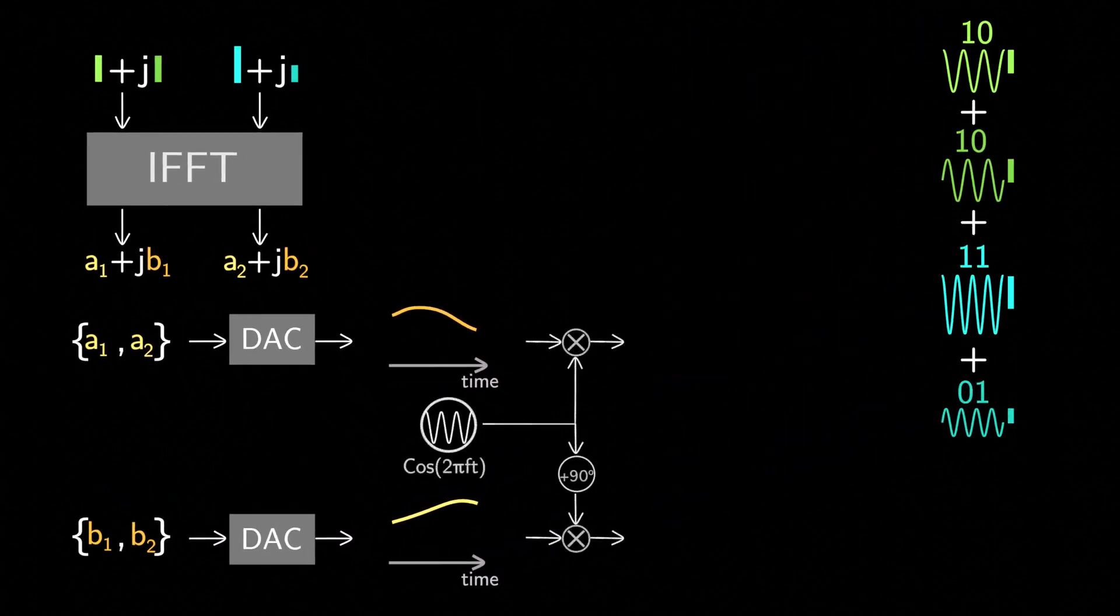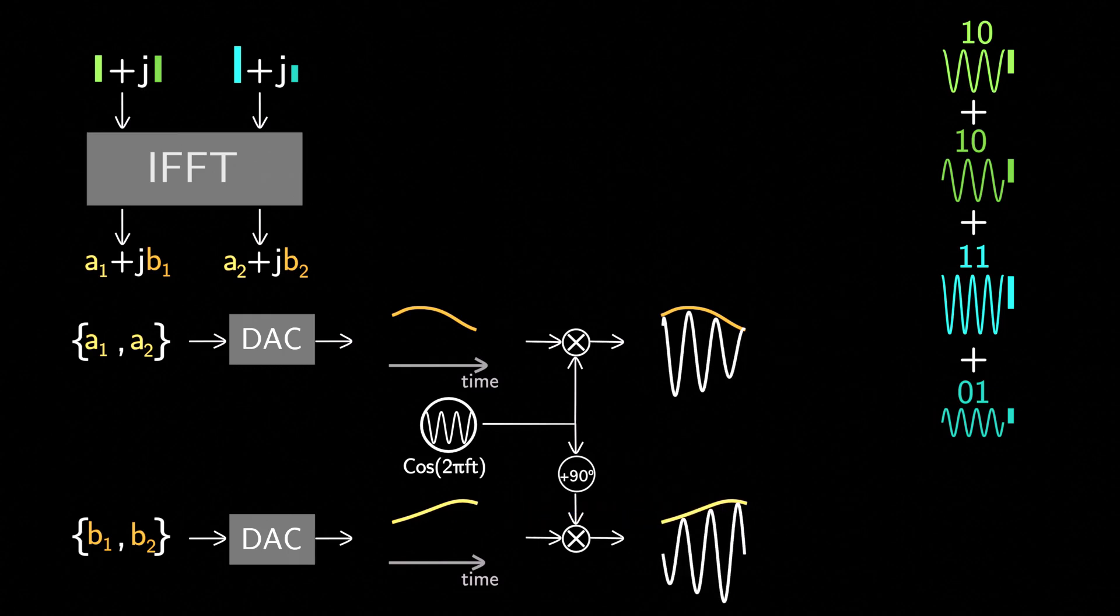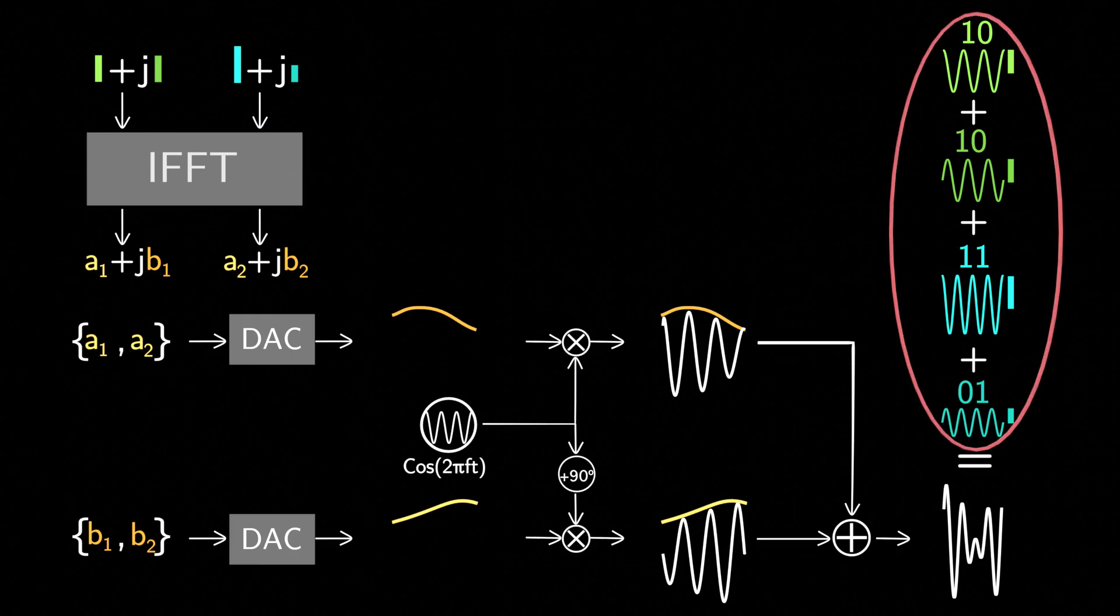Finally, we multiply the real part by a cos wave, and the imaginary part by a negative sine wave, from a common oscillator. Then, add them together and transmit. This resulting signal is same as what you would get if you used individual oscillator for each subcarrier, which we saw earlier.